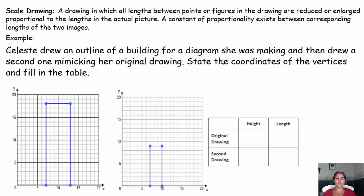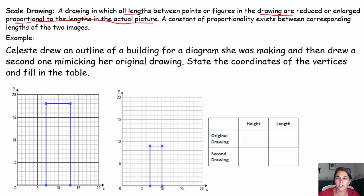A scale drawing is a drawing in which all the lengths between points or figures in a drawing are reduced or enlarged proportional to the length of the actual picture. A constant of proportionality exists between corresponding lengths of the two images. The points or lengths in the drawing are proportional to the lengths of the actual picture, meaning drawing over actual will be the same for any length or any width that you're looking at. That will also give you your constant of proportionality.